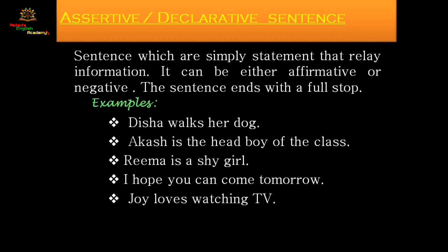'Disha walks her dog' — we are just telling that she takes the dog for a walk. 'Akash is the head boy of the class' — we are simply stating information about Akash. 'Rima is a shy girl' — we are simply telling someone about Rima. 'I hope you can come tomorrow.' 'Joy loves watching TV.' These are all declarative sentences giving information or making a declaration.